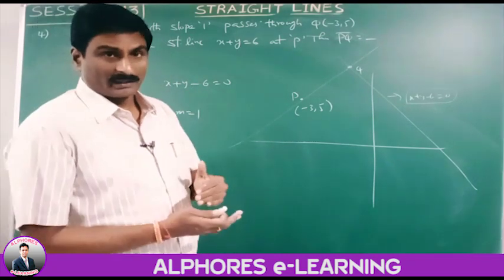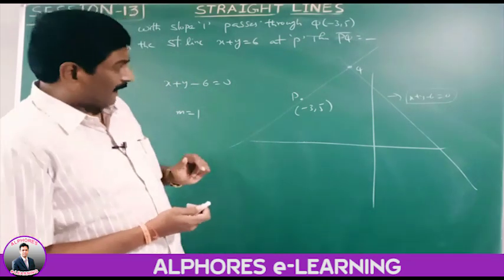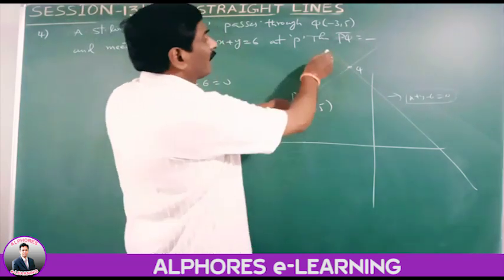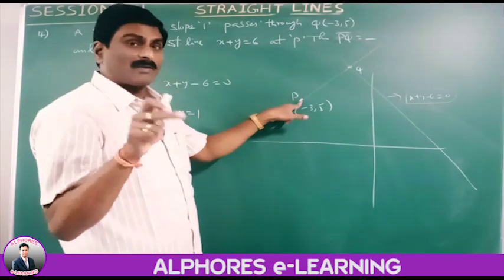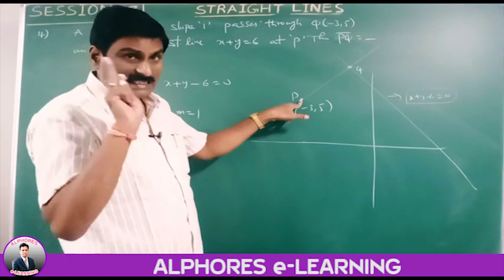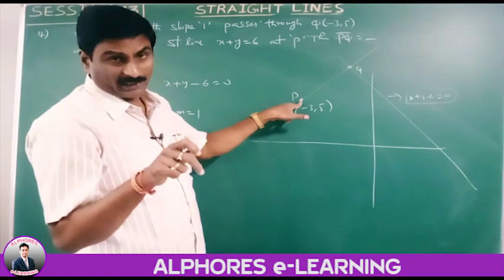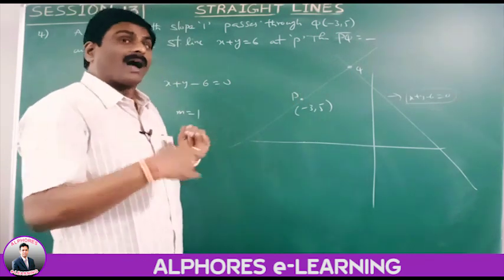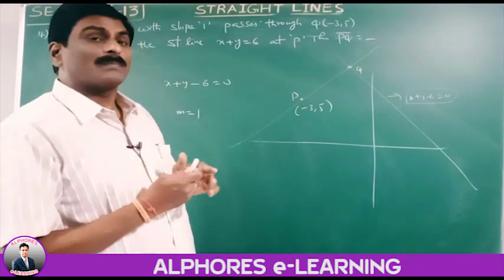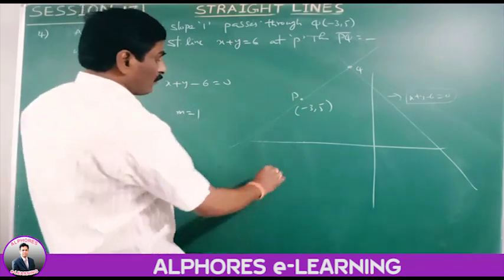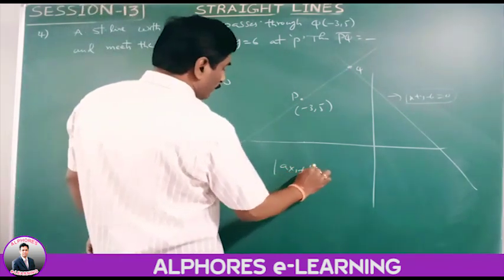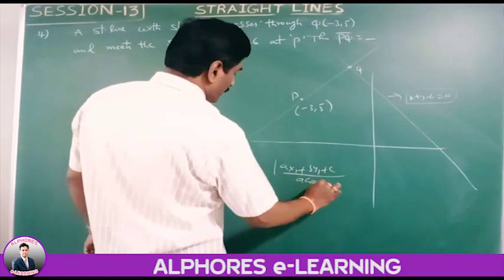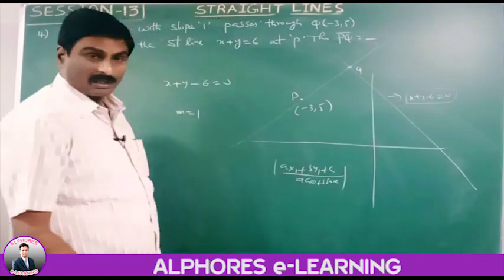Alternative method: the distance from a point to a line along a direction making angle theta is given by |ax1 plus by1 plus c| divided by |a·cos(theta) plus b·sin(theta)|. Here, the slope is 1, so theta equals 45 degrees.